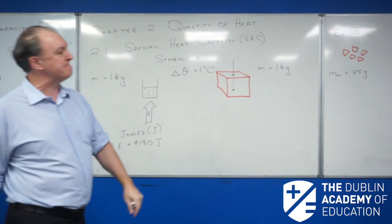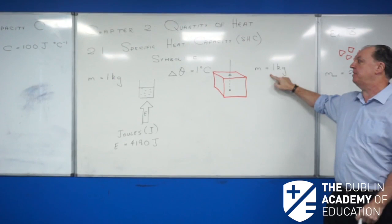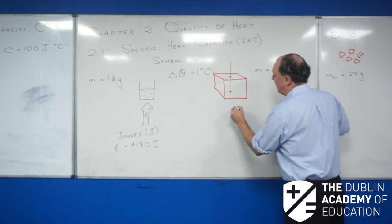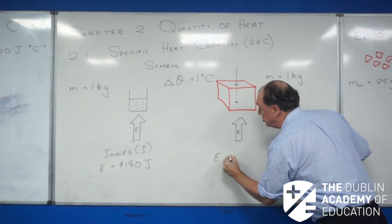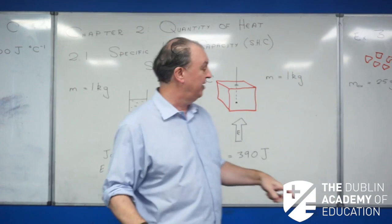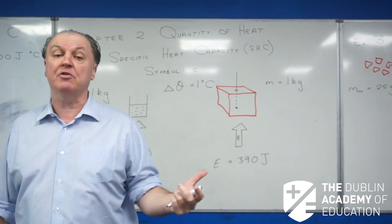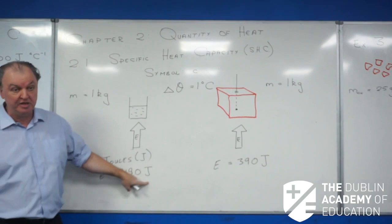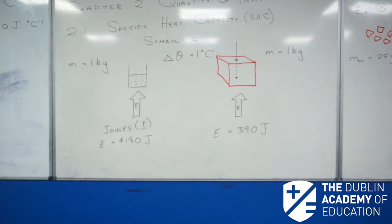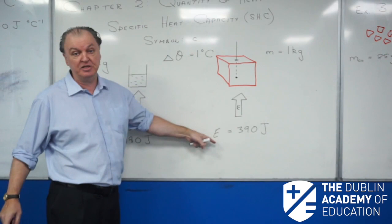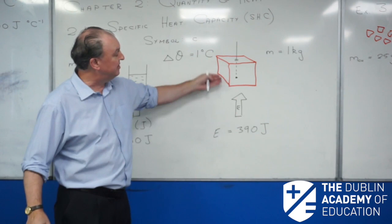What about copper? I have exactly one kilogram of copper, and I want its temperature to go up by one degree Celsius. The amount of energy we have to add this time is 390 joules. So compared to water, I only need 390 joules to raise the temperature of one kilogram of copper by one degree Celsius, whereas I need over 10 times more energy to do the same thing to water. Those materials have a special property called their SHC or specific heat capacity. Copper has a much lower SHC than water, meaning it's far easier to heat up copper.